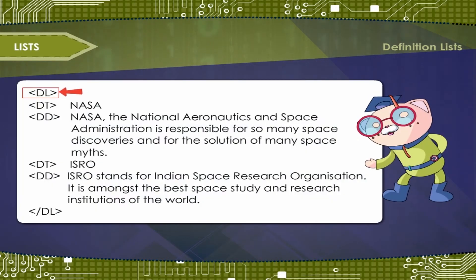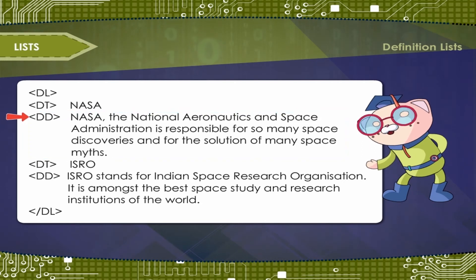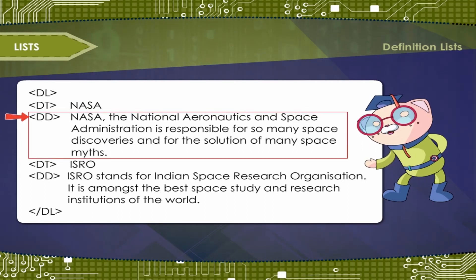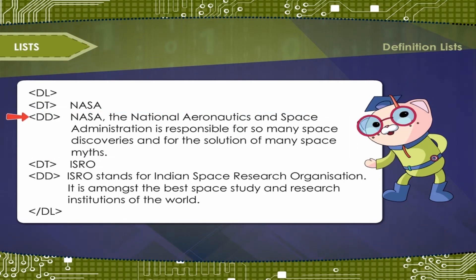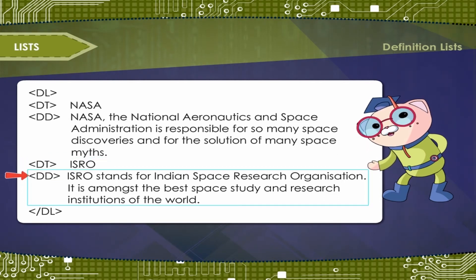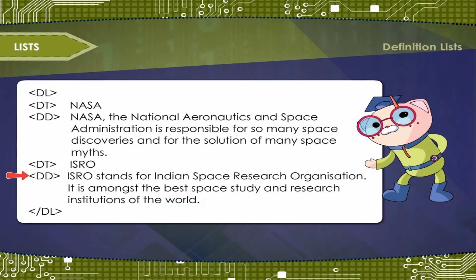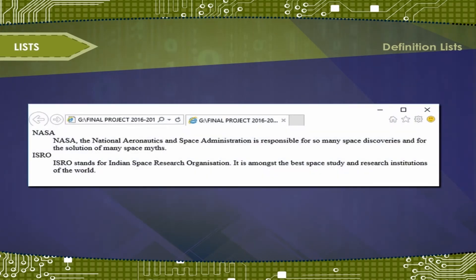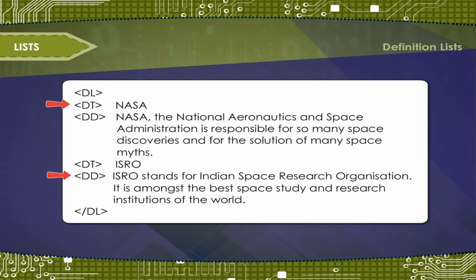Example: tag DL, tag DT NASA, tag DD — NASA, the National Aeronautics and Space Administration, is responsible for so many space discoveries and the solution of many space myths. Tag DT ISRO, tag DD — ISRO stands for Indian Space Research Organization; it is amongst the best space study and research institutions in the world. Close tag DL. The DT and DD entries can contain multiple paragraphs indicated by P tags, lists, or other definition information.